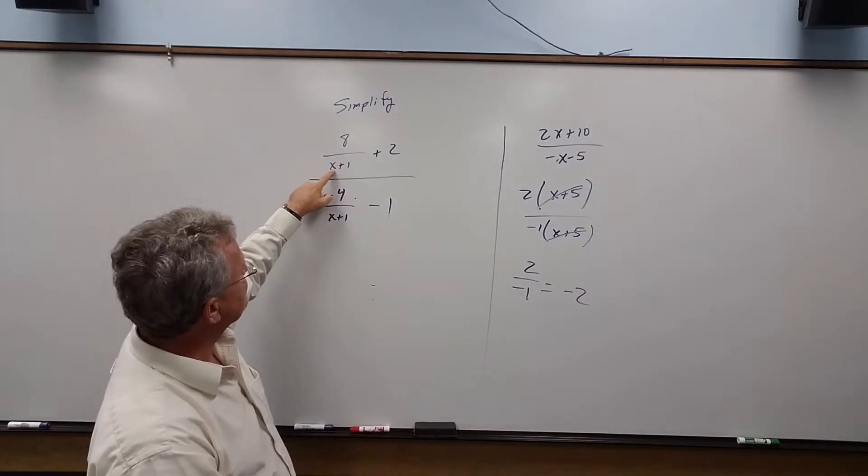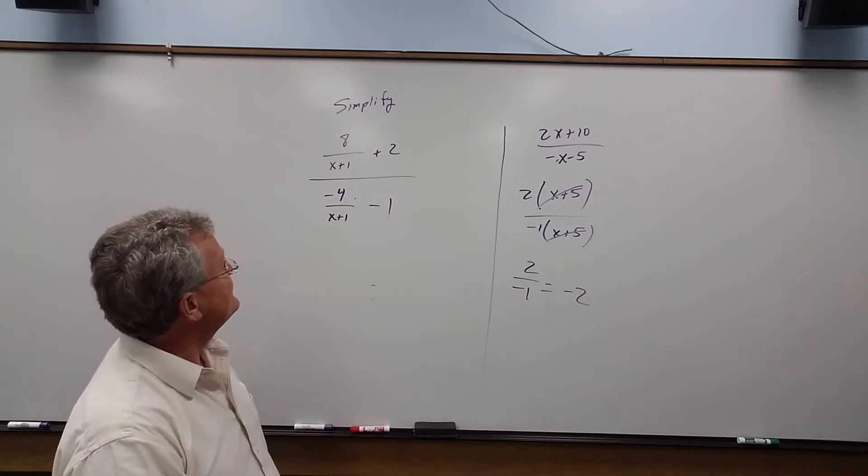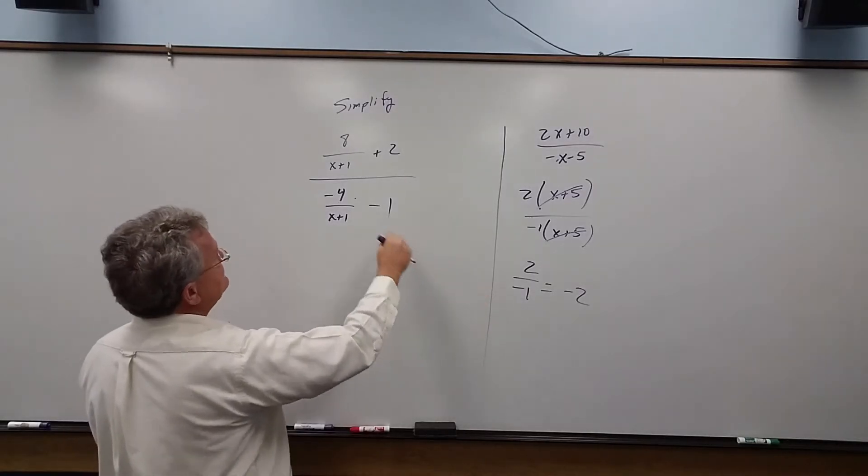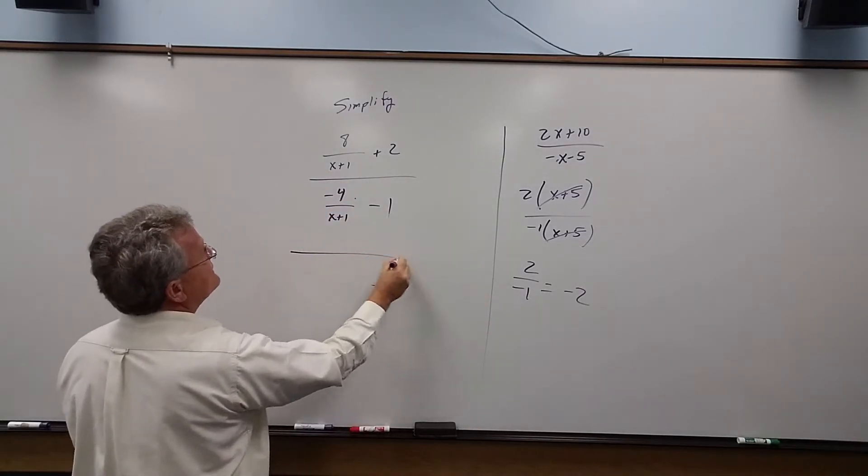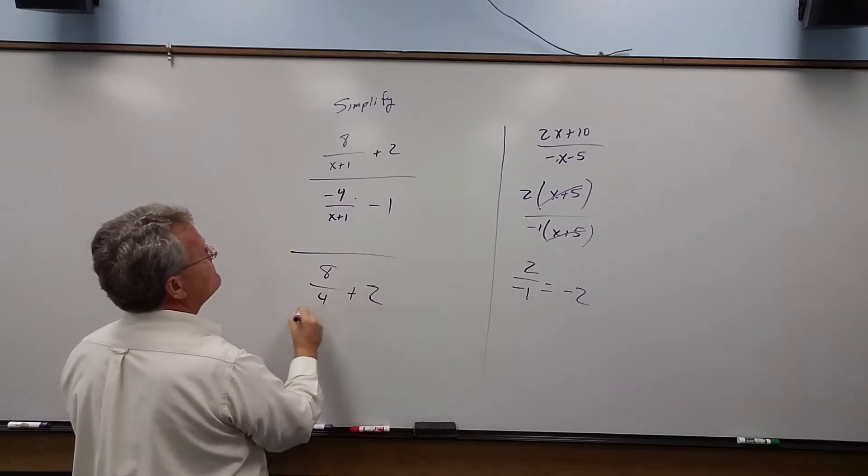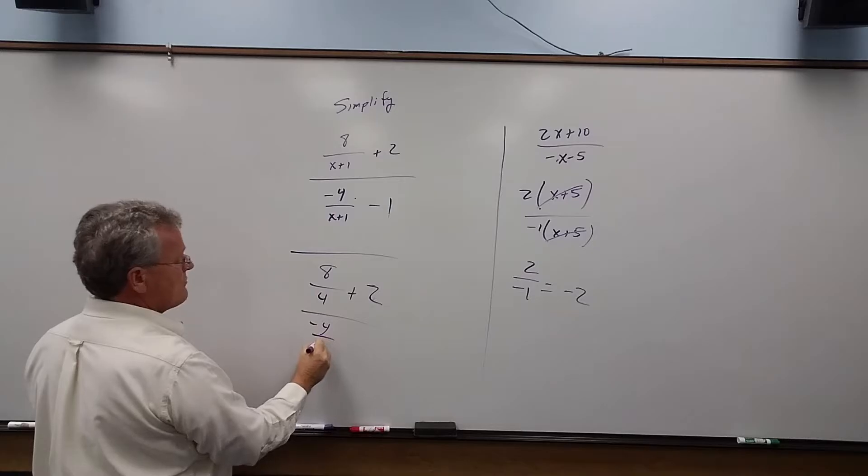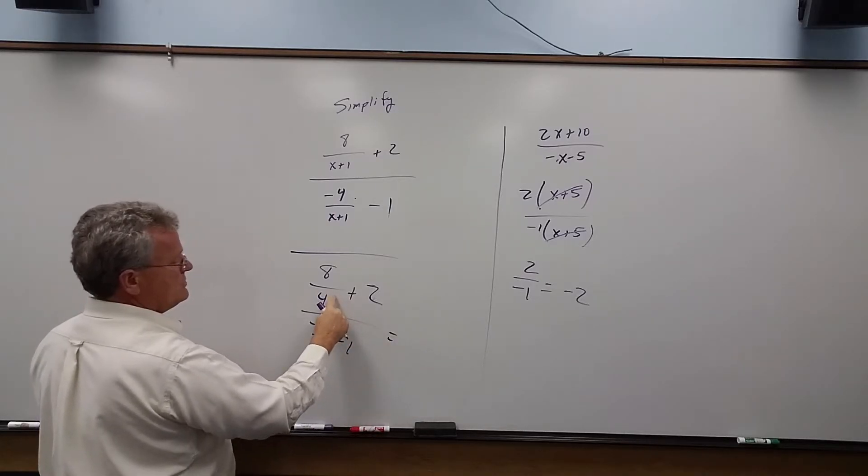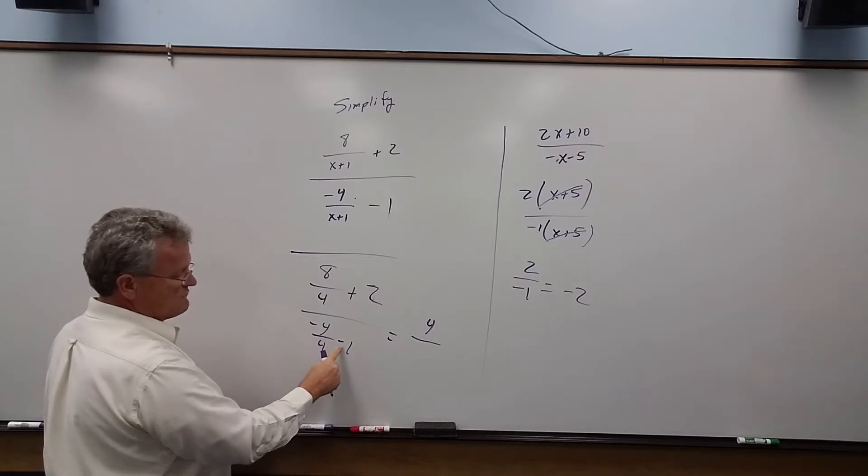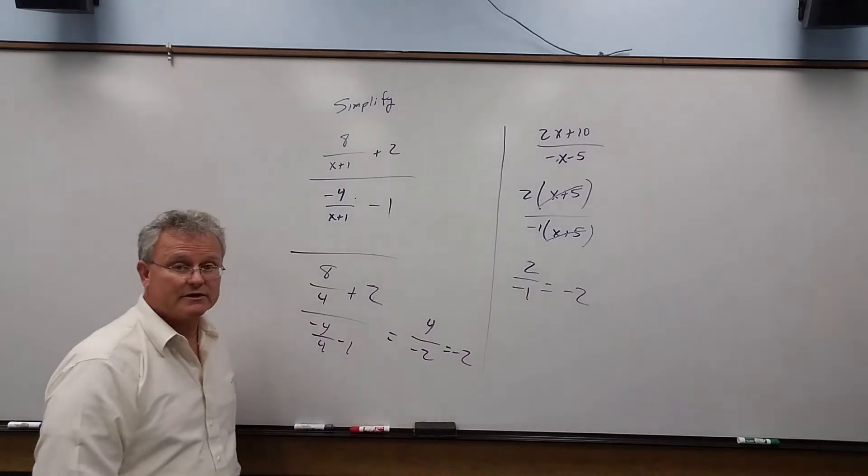Of course, we don't want to let x equal negative 1 because it's not in the domain. But let's let x equal 3 just to show we're going to get negative 2. When x is 3, what do we get? 8 over 3 plus 1 is 4, 3 plus 1 is 4, so we get negative 4 over 4. 2 plus 2 gives us 4. Negative 1 and negative 1 is minus 2, and sure enough we get minus 2.